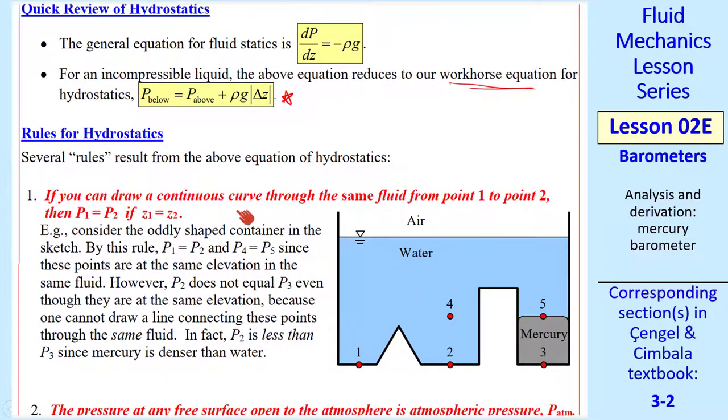Rule number one: if you can draw a continuous curve through the same fluid from point 1 to point 2, then p₁ = p₂ if z₁ = z₂. In other words, if the two points are at the same elevation. For example, points 1 and 2 are at the same elevation, and we can draw a continuous curve through the same fluid, so p₁ = p₂. Similarly for p₄ and p₅. Points 2 and 3 are at the same elevation, but if I try to draw a continuous curve through the same fluid, I can't do it because I have to pass through this interface between water and mercury. So p₂ does not equal p₃. p₃ will actually be greater than p₂ because mercury is more dense than water.